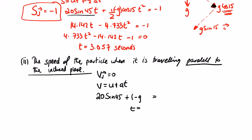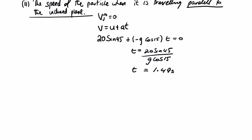So T equals... sorry, I left out my cos 15 from up here. G cos 15 times T equals zero. So T is equal to 20 sine 45 divided by G cos 15. And we type that into a calculator, we're going to get 1.49 seconds to get to that point where it's traveling parallel to the inclined plane.